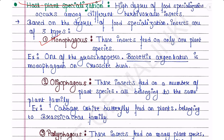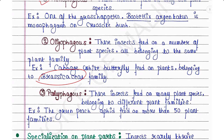An example of oligophagous insects is the cabbage white butterfly, which feeds on plants of the same plant family. Essentially, these insects take their food from different plant species, but they all belong to the same plant family. Next is polyphagous — these insects feed on many plant species belonging to different plant families. For example, the green peach aphid feeds on more than 50 plant families; they are not very choosy about their food.